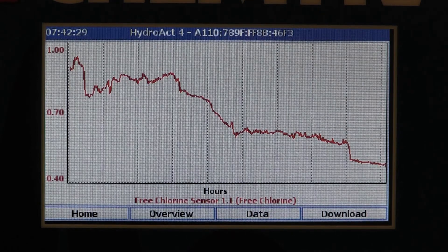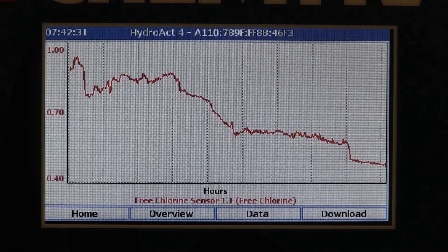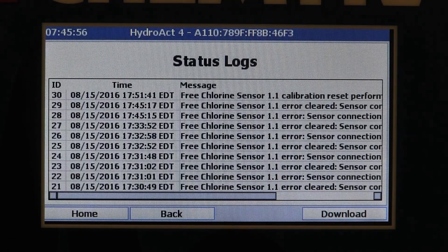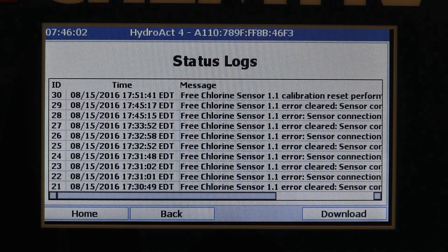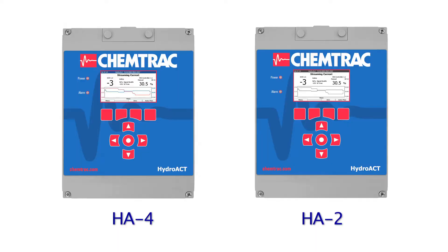The Hydroact Analyzer provides a graph display for reviewing historical readings, and a service log which allows the user to view when the calibrations were performed, as well as when any alarm events took place. The HA4 model has a color display and a downloadable data log, while the HA2 model has a grayscale display and no data download capability.